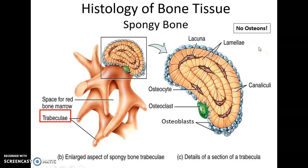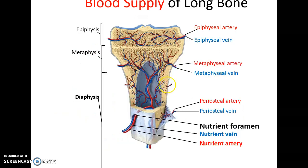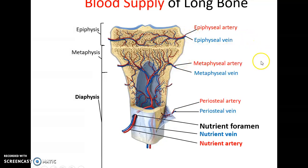In spongy bone there are no osteons, but there are still lamellae, canaliculi, and lacunae housing osteocytes. Instead, they form girders or ridges called trabeculae, creating the spongy-like matrix. Bones are living organs requiring many blood vessels. There is a nutrient foramen — an extra-large hole for the nutrient artery and veins — plus various other arteries and veins supplying the different regions of the bone.